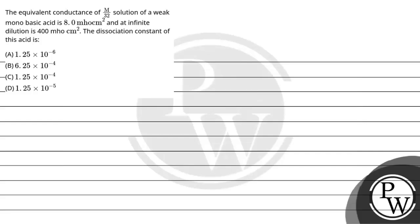Let's read the question. The question says the equivalent conductance of M/32 solution of a weak monobasic acid is 8.0 mho centimeter square, and at infinite dilution it is 400 mho centimeter square. The dissociation constant of this acid is...